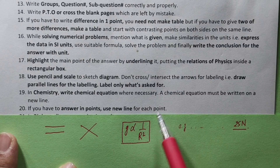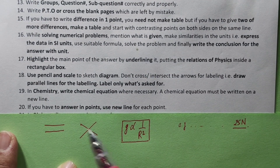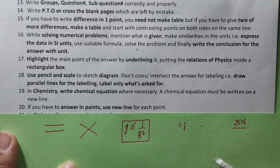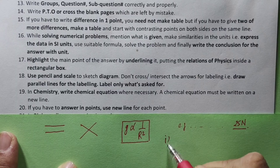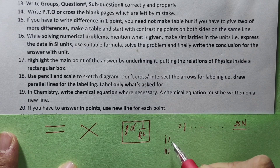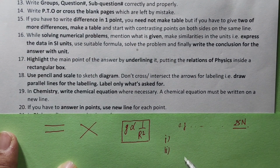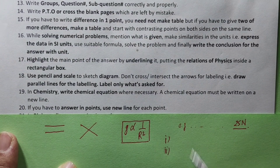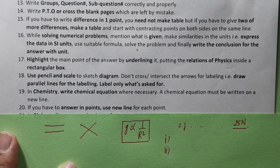If you have to answer any points, use a new line for each point. If you have to write two points to explain, write each point separately. Point number 1 and point number 2 should be on separate lines. If not written on a new line, the examiner may reduce marks.